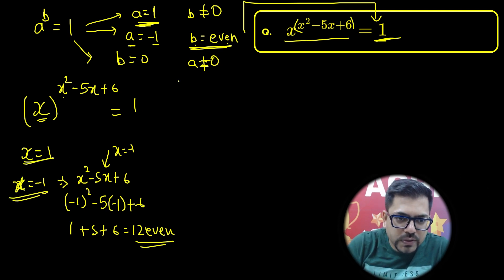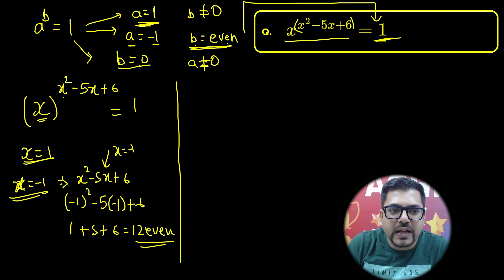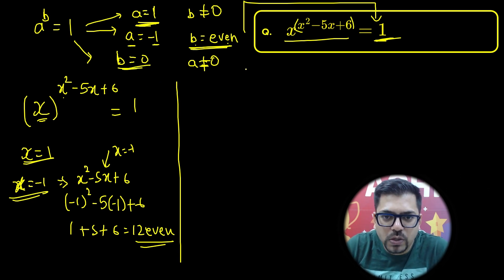X equals 1 is also a solution. Now we have to go for the last one, that is b equals 0, meaning the exponent has to be 0.